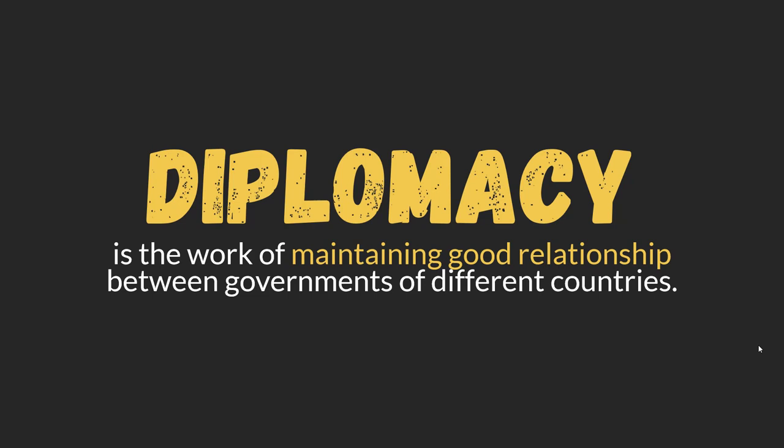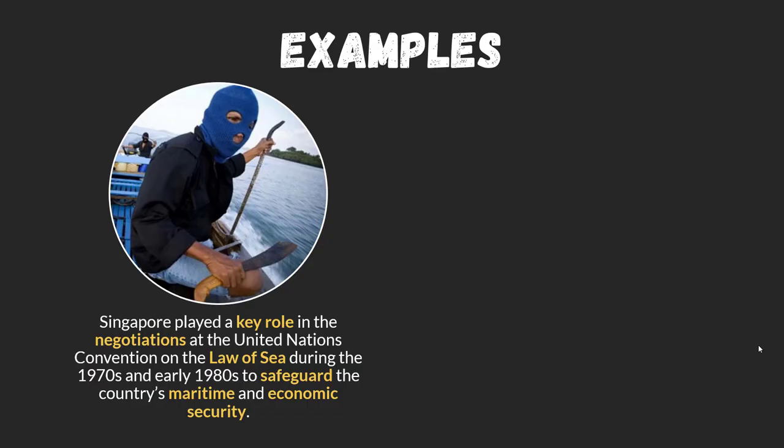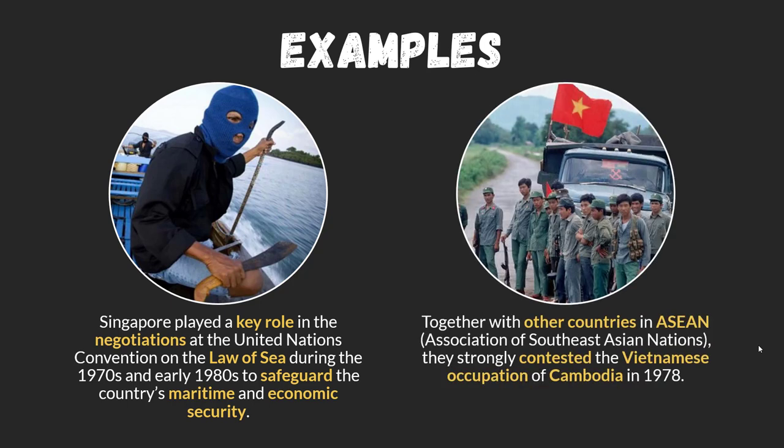Singapore plays a key role in diplomacy. For example, Singapore participated in the negotiation of the United Nations Convention on the Law of the Sea during the 1970s and 1980s, which secured Singapore's maritime economic security against threats like pirates to our sea trade. Together with other ASEAN countries, Singapore also contested the Vietnamese occupation of Cambodia in 1978. These are matters that go beyond our borders but affect Singapore, so we must take a stand to protect our interests.